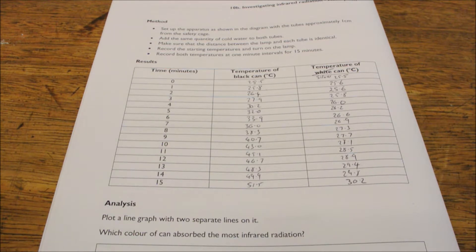And here are the final results showing that the black can had increased in temperature all the way up to 51.5 degrees, and the silvered can had only increased to 30.2 degrees C.